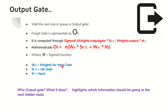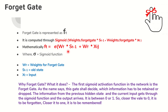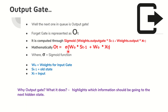The output gate highlights which information should go to the next hidden state. It is represented as OT, and the formula follows the same pattern: OT = sigmoid of (WO × ST−1 + WO × XT). So we have now derived all three gates: FT (forget gate), IT (input gate), and OT (output gate).